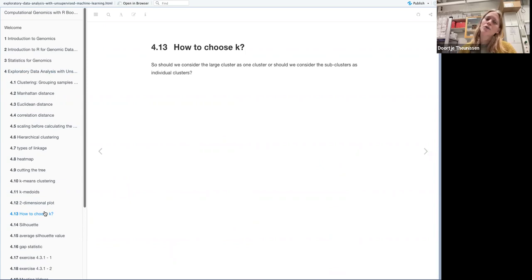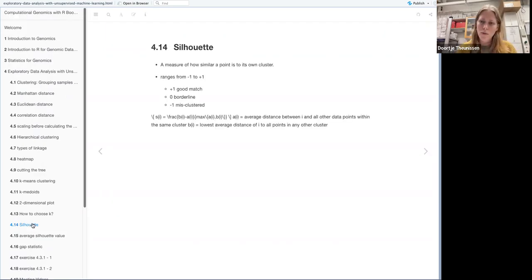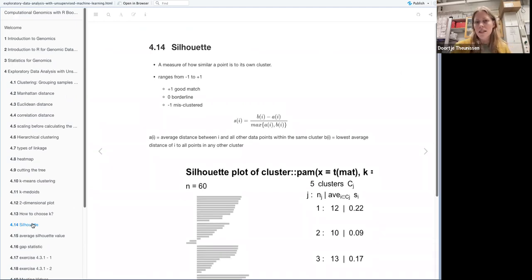So then they talk about how you should choose your k. In the example with leukemia patients it's really easy because you have your setup which has the four groups that are diseased and one healthy group so you have k is 5. But in general when you don't have set groups you have to pick a number and they give two main ways to do this. The first is the silhouette value and it's a measure of how similar each point is to the cluster it is in. It can range from minus 1 to plus 1, plus 1 meaning it's a very good match, 0 that it's borderline and minus 1 that it's misclustered.